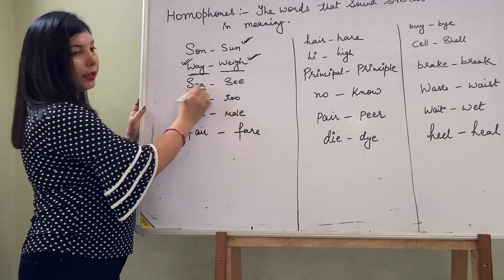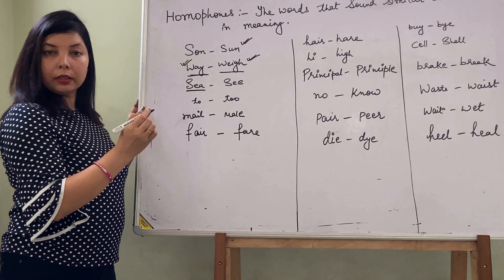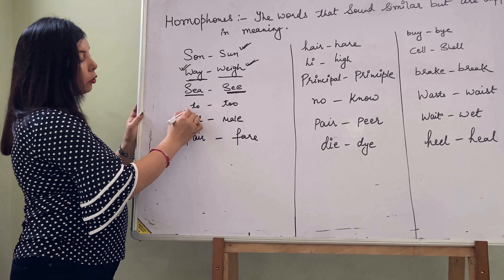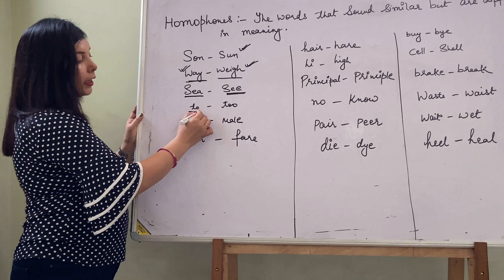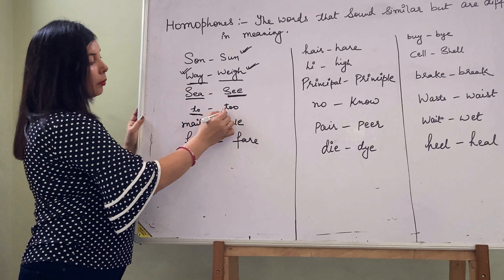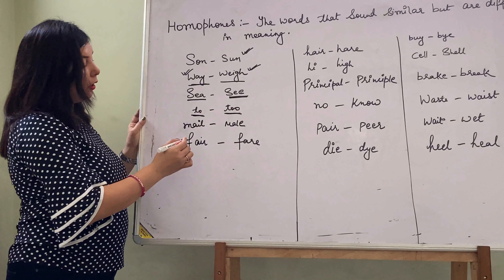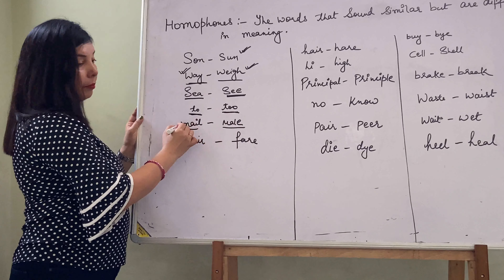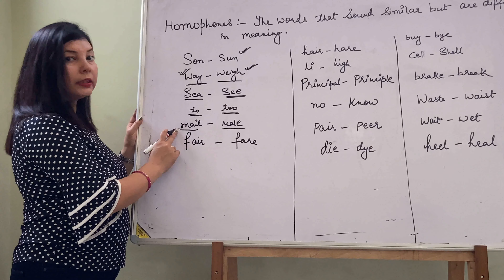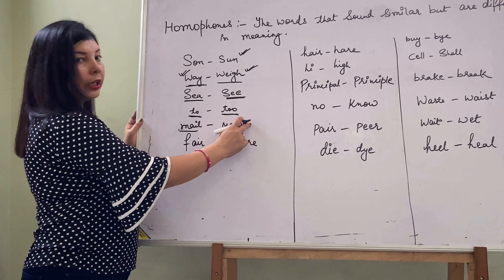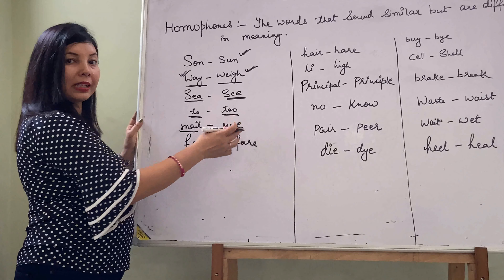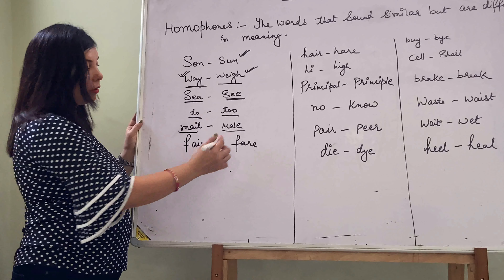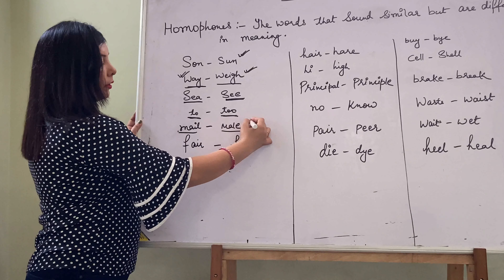S-E-A, yani samandar (sea), and C means to watch (see). 'Two', yani kisi ke liye (for someone), aur T-W-O ka matlab bhi (the number two). So 'mail' and 'male' — mail ki meaning alag hai. This 'mail' is a letter, and this 'male' is masculine gender, represented by male.